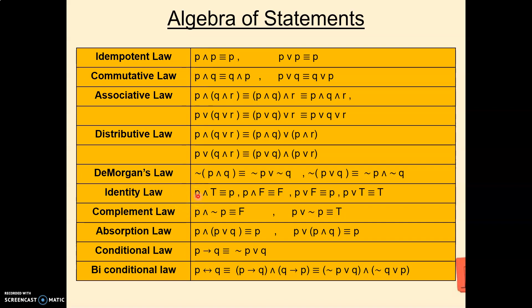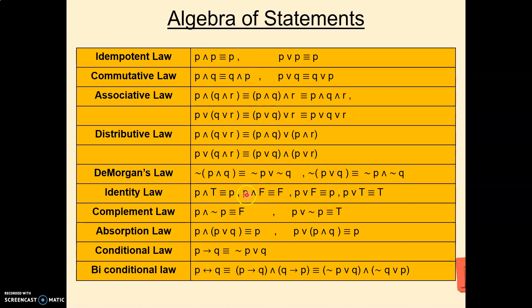Next is the Identity law. In this one only one statement is required. P∧T is equivalent to P. If P is true, T∧T = T. If P is false, F∧T = F. So in both cases the answer is the value of P itself. And P∧F is equivalent to F. If P is true, T∧F = F. If P is false, F∧F = F. So in both cases the value is false.